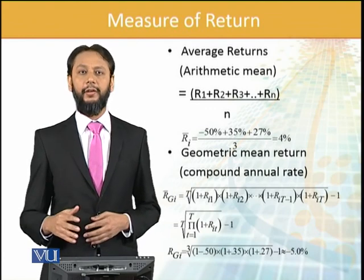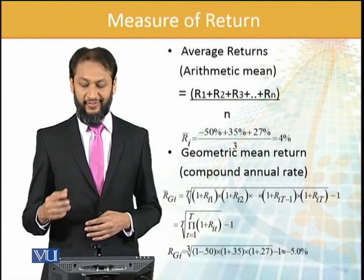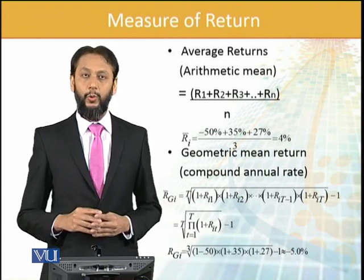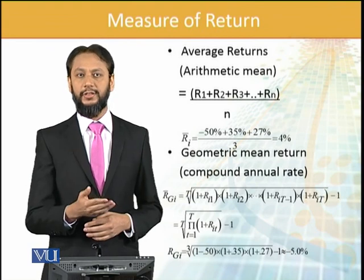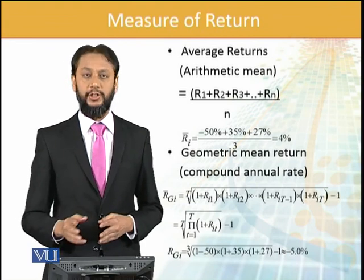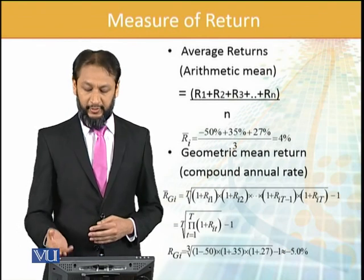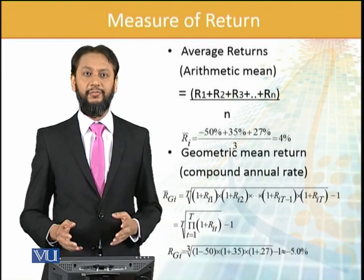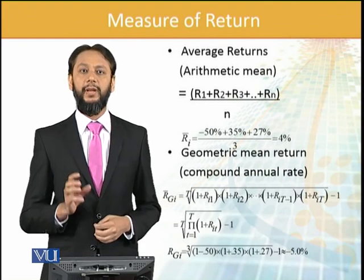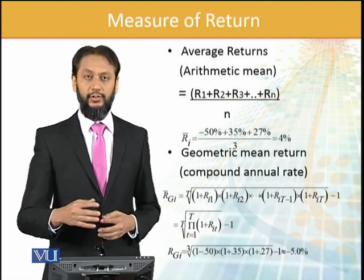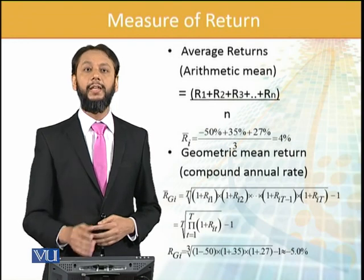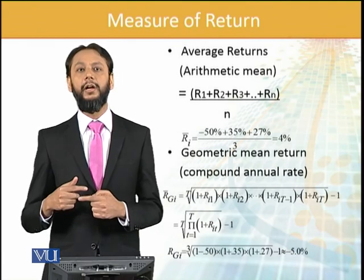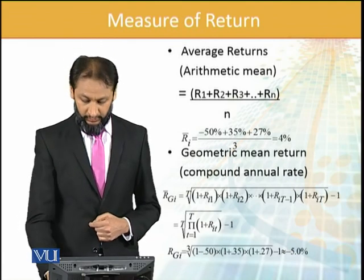Whereas when we move to the geometric mean, because it has a compounding effect, it takes us to a different result. We take (1 + R) for each respective period. In this case the return comes out to be minus 5%, because in the beginning we had a major fall. So rather than an average of 4%, we have a negative 5% average return — that is the geometric return, because we are capturing the compounding effect of what is being done.